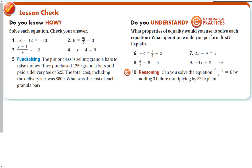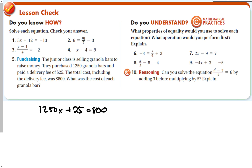Solve each equation. For number 1, add 12 first, then divide by 5. For number 2, subtract 12 first, then divide by 5. Here, add 3 and then multiply by 7. Here, multiply by 4 first and then add 1. Here, add 4 and then divide or multiply by negative 1. For the junior class granola bar problem — they purchased 1,250 bars with a $25 delivery fee for a total of $800 — set up 1,250 times the cost per bar plus 25 equals 800, subtract 25 and divide by 1,250, giving x equals $0.62.